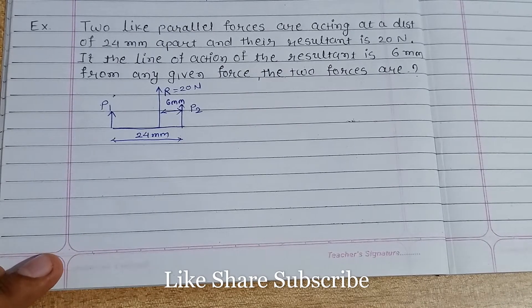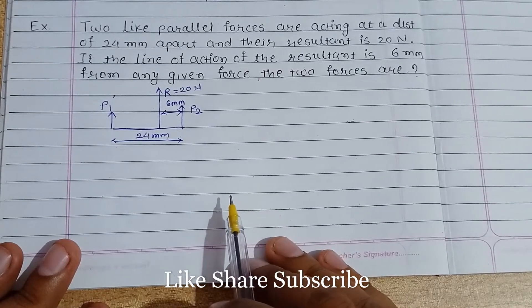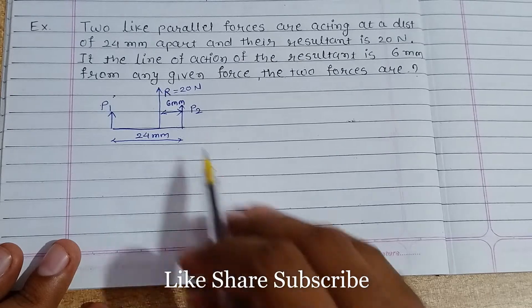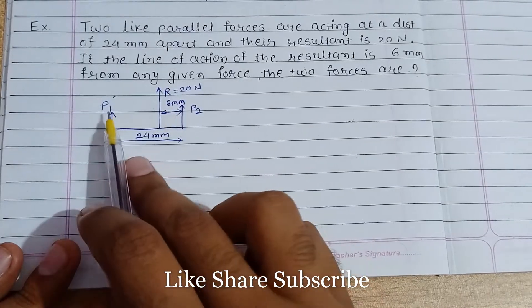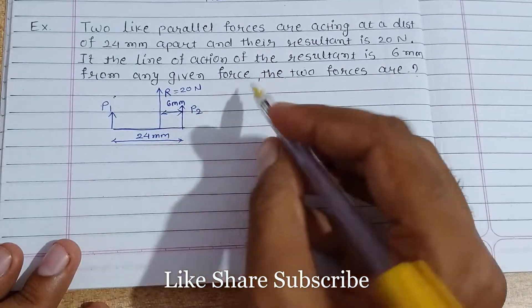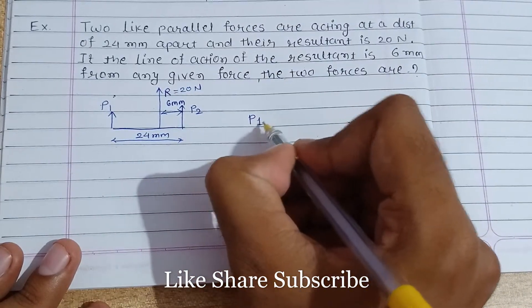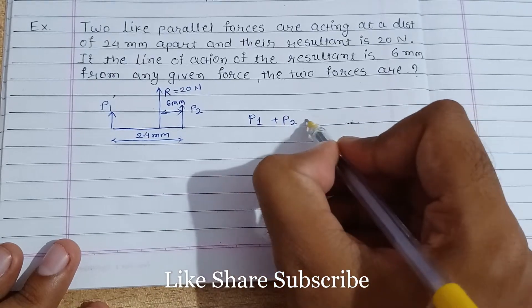Let's solve this problem. Now we know that the resultant of P1 and P2 is equal to 20 newton. So property of the resultant force, summation of P1 plus P2 is equals to 20 newton. So this is our equation number one.